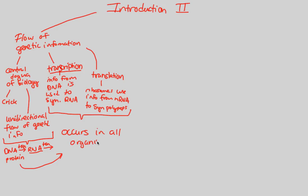This central dogma occurs in all organisms. That is a very humbling thing to think about — from the simplest organisms like unicellular prokaryotes to the most complex humans that are eukaryotic, every single living organism that we know of undergoes this central dogma of transcription and translation, thus gene expression. That's a really amazing thing to think about.